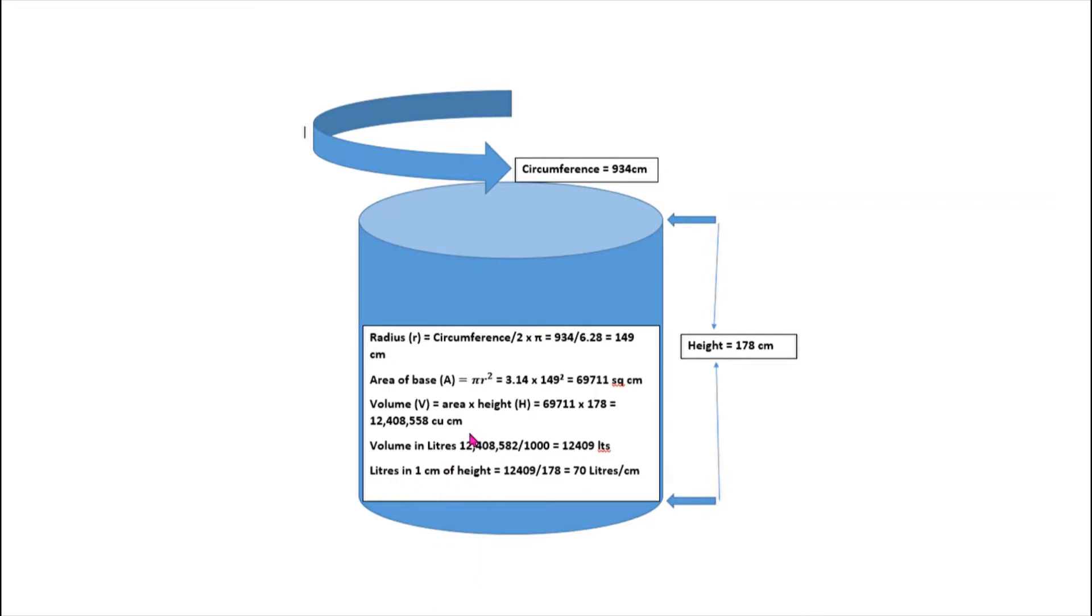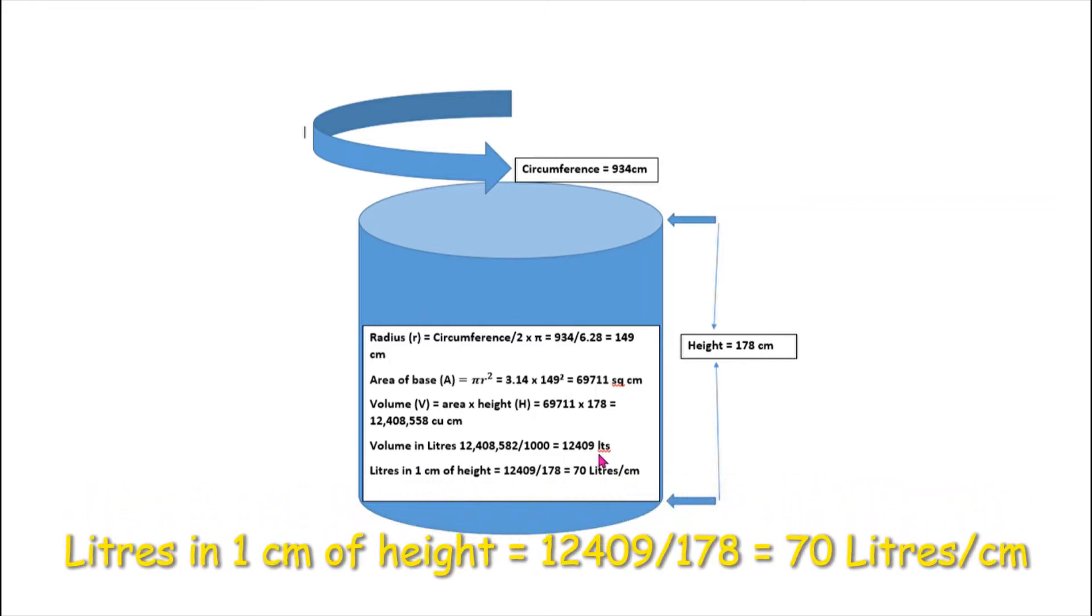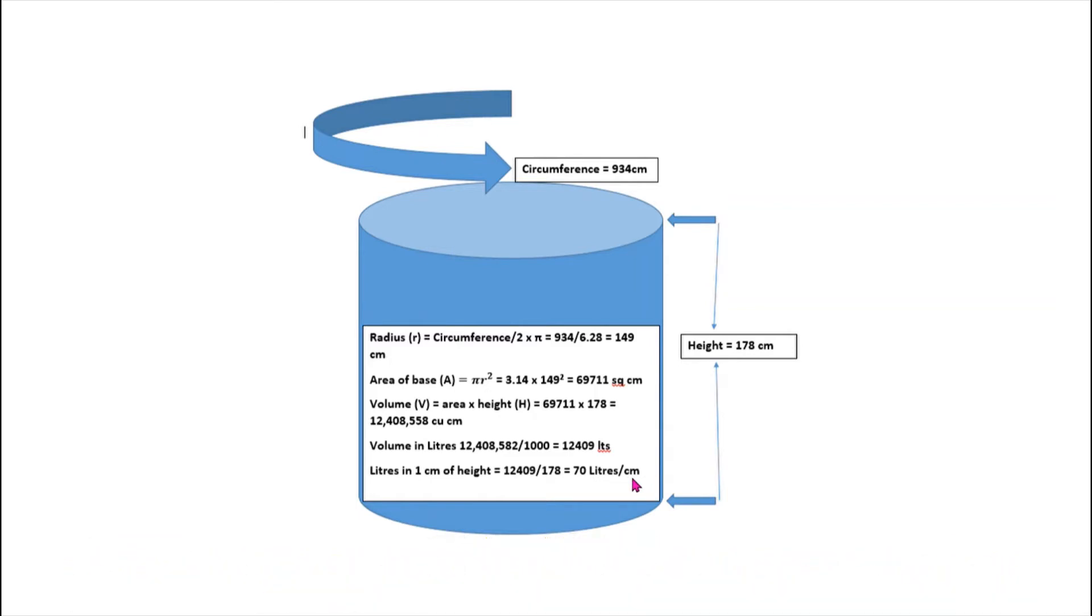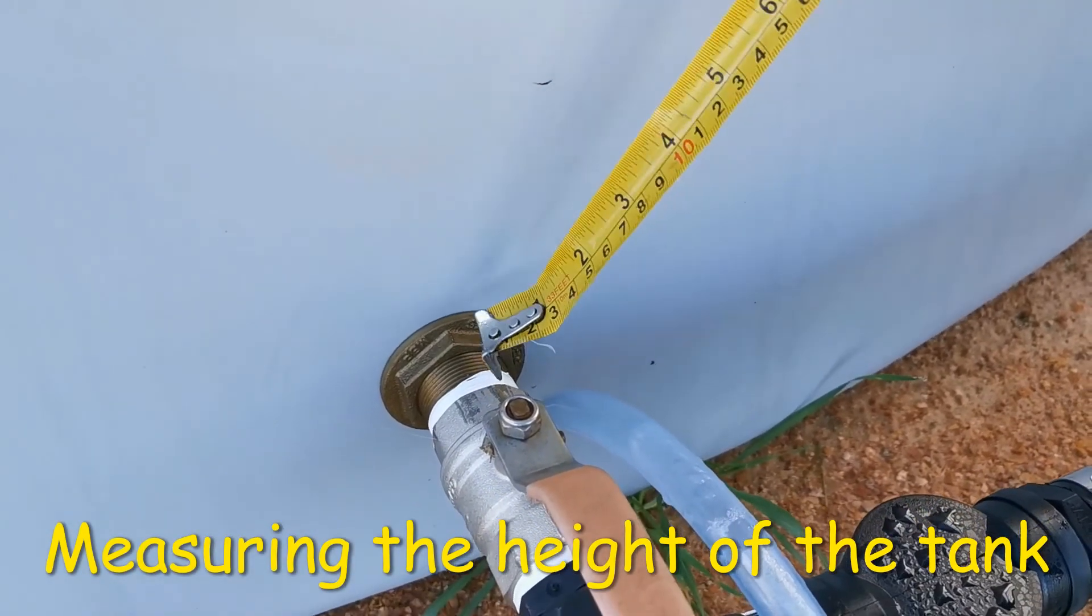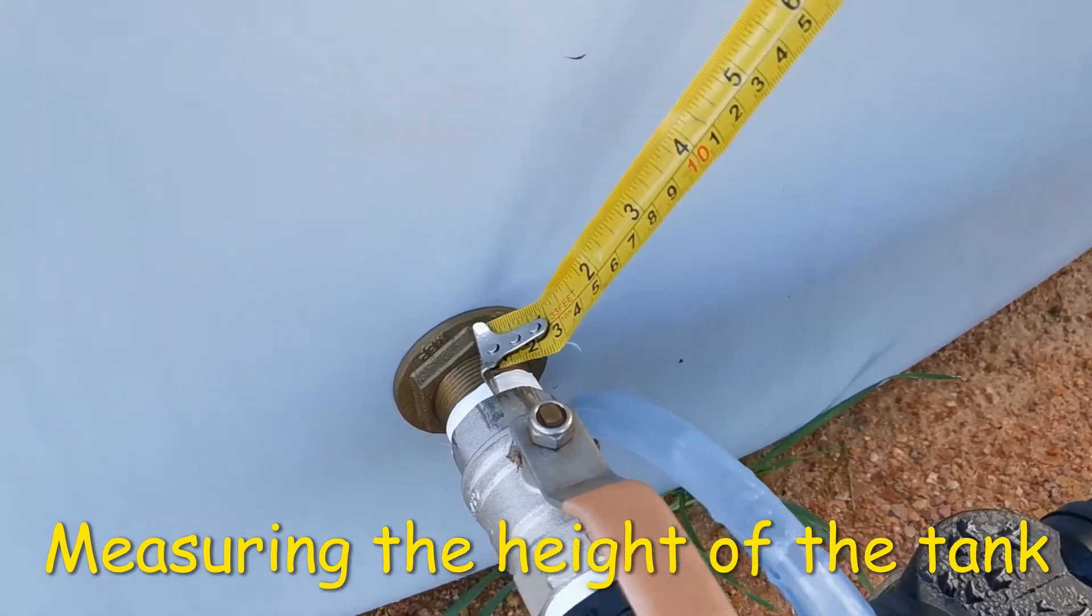Now to put that into perspective, we can calculate what one centimeter of height means in terms of liters. So we divide the 12,409 total liters by the height, and that gives us about 70 liters per centimeter of height.